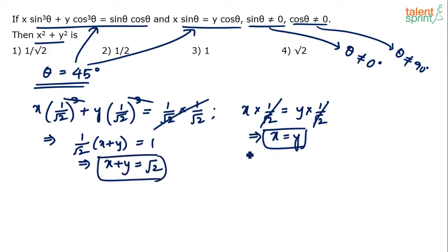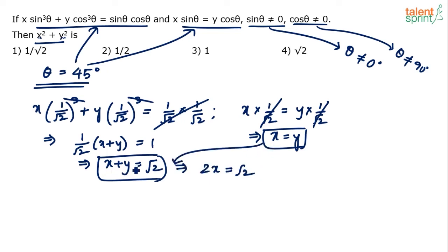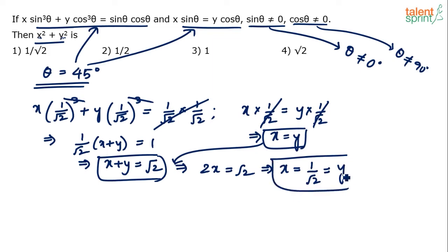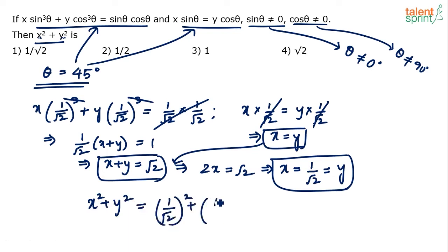So we know x + y = √2 and x = y. Substituting x = y into x + y = √2 gives 2x = √2, so x = √2/2 = 1/√2. Therefore y = 1/√2 as well. Now substitute into x² + y²: (1/√2)² + (1/√2)² = 1/2 + 1/2 = 1. The answer is option 3, which is 1.